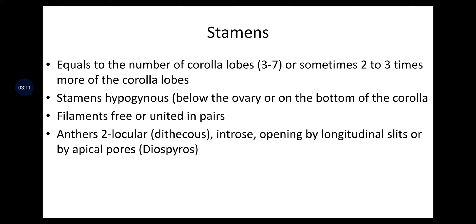Stamens hypogynous — that is, below the ovary — or on the bottom of the corolla. Filaments free or united in pairs. Anthers two-locular, that is dithecous, introrse, opening by longitudinal slits or by apical pores, i.e., Diospyros.